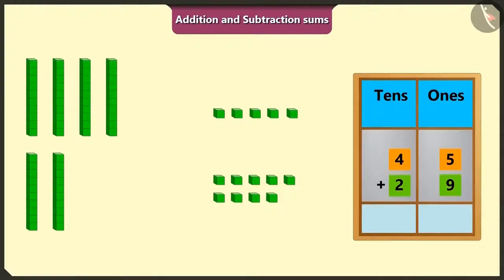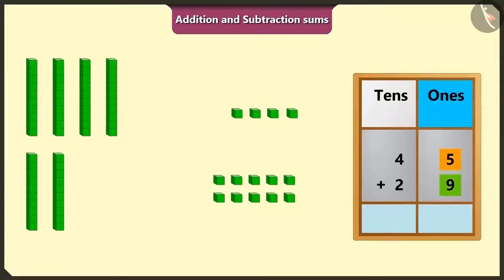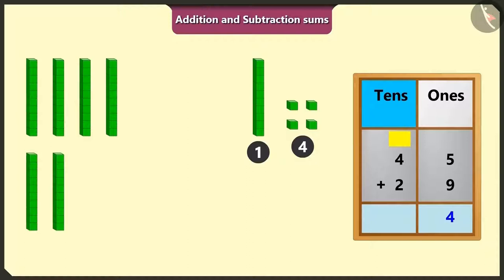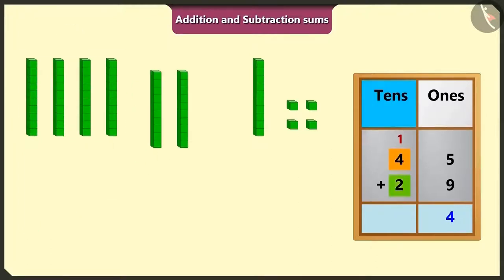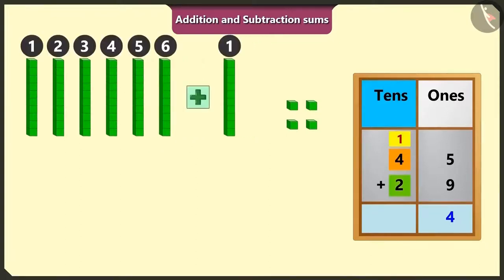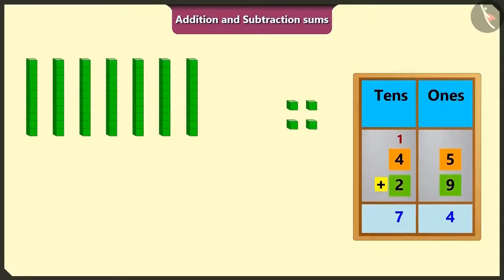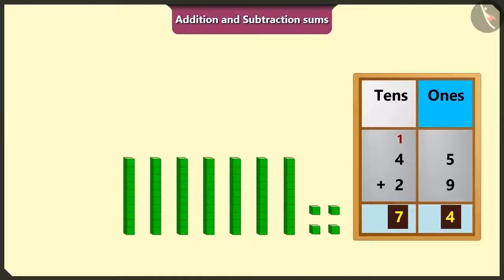Let's put 45 and 29 in the ones and tens boxes and do their addition. We add the ones first. Adding 5 ones to the bigger number 9, after 9 it will be 10, 11, 12, 13, and 14. There are 4 ones and 1 ten in 14, so we write 4 in the ones place and carry over 1 to the tens. Adding 2 tens to 4 tens gives 6 tens, and adding the carried-over 1 ten gives 7 tens. So 45 plus 29 equals 7 tens and 4 ones, meaning 74 rupees.